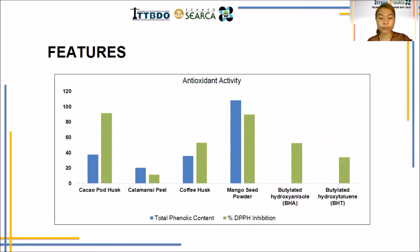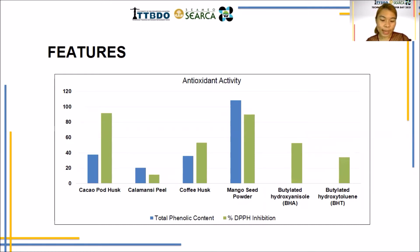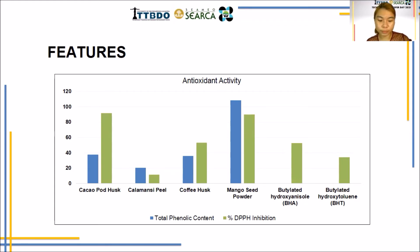The dietary fiber from cacao pod husk has high antioxidant activity compared to other waste by-products analyzed and synthetic antioxidants like BHA and BHT. When added to food, antioxidant-rich fiber can increase the shelf life of food. Antioxidants also reduce the risk of cancer, atherosclerosis, and vision loss.